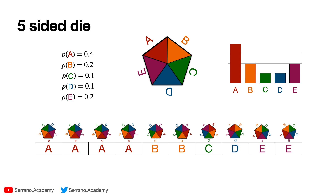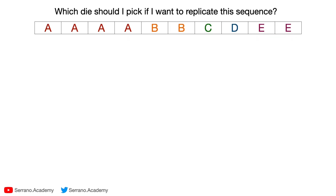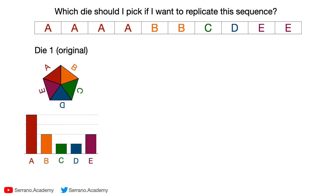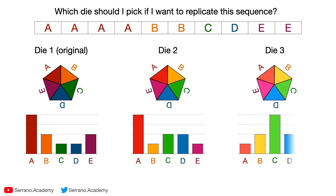Now the question is the following: let's say I want to toss this die and replicate the sequence — so I want to get A, A, A, A, B, B, C, D, E, E. That is not easy, even though the die has those probabilities. But let's say we win a lot of money if we're able to replicate this sequence. If we want to replicate the sequence, which of the following dies is a better choice? The first one is the original die. Then we have another die that is kind of similar but has different probabilities. And finally a third die with yet another set of probabilities. Which one would you pick?